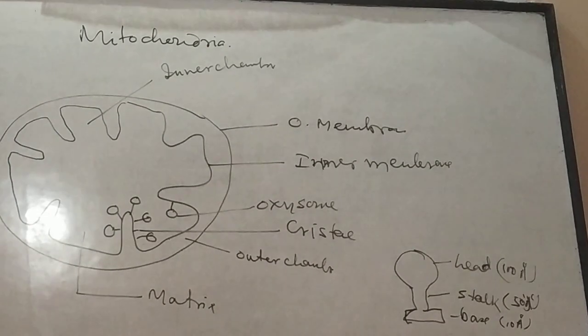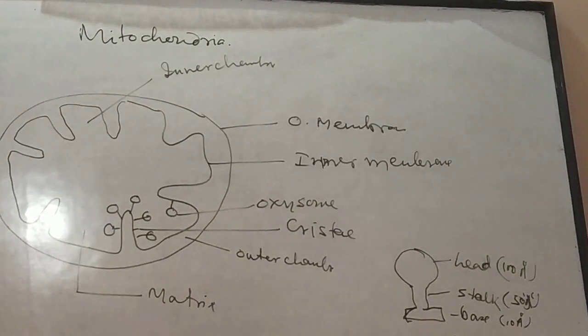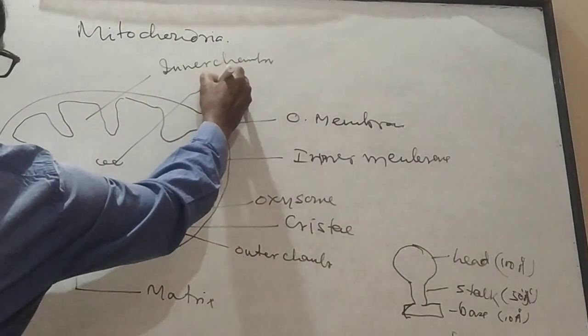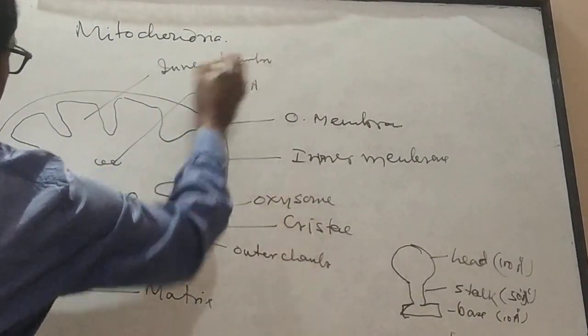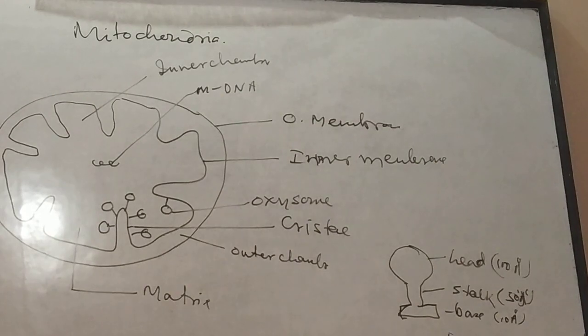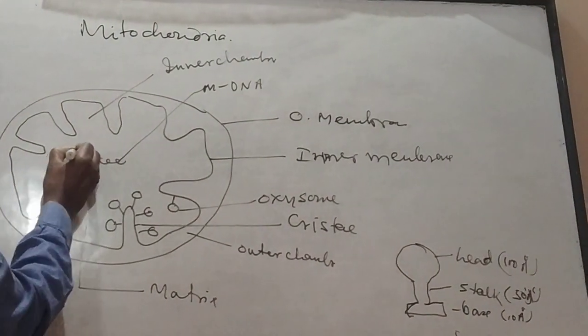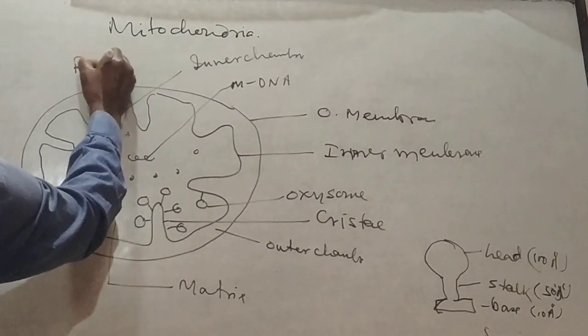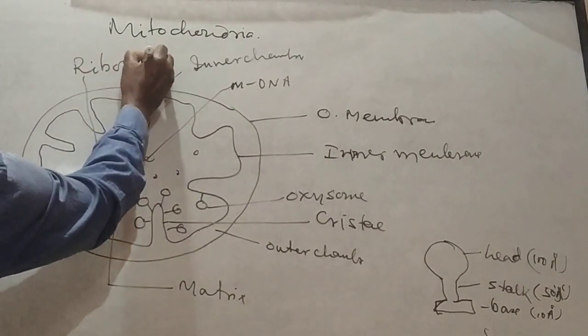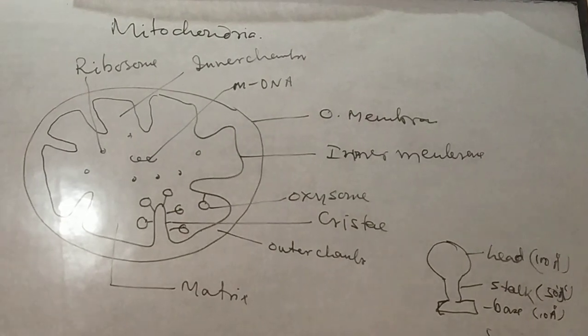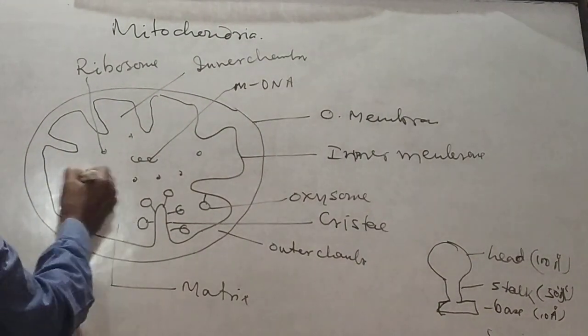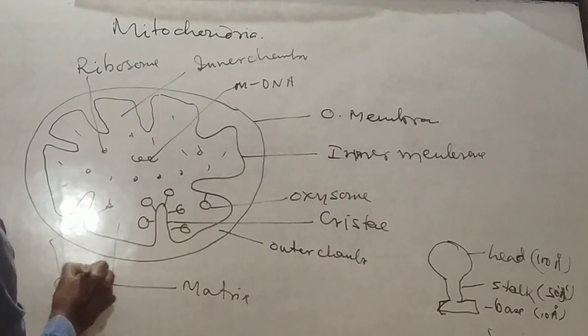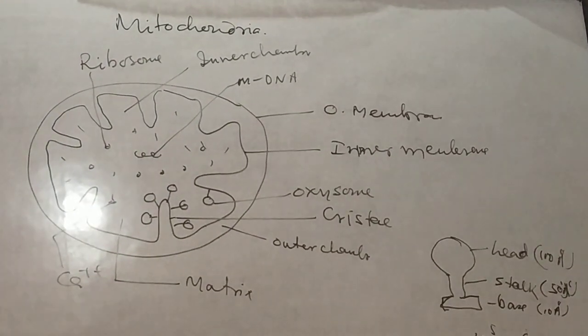The matrix contains mitochondrial DNA, MDNA which is a circular DNA. It also contains ribosomes, these are ribosomes and also contains calcium and magnesium.